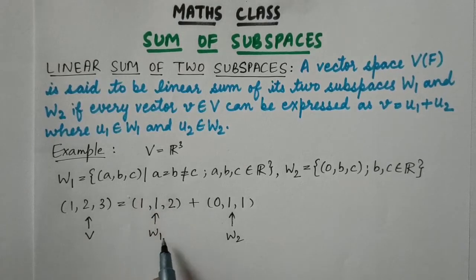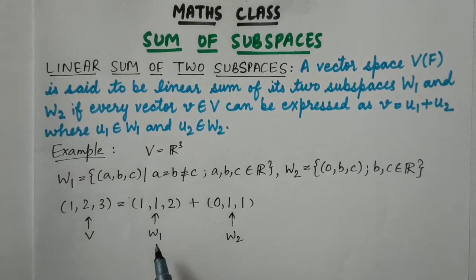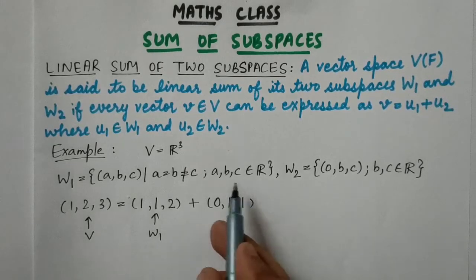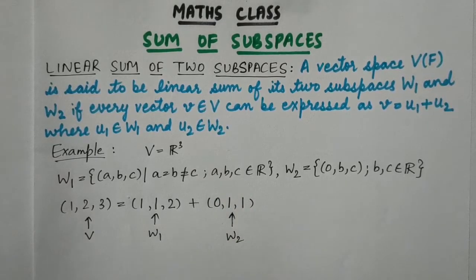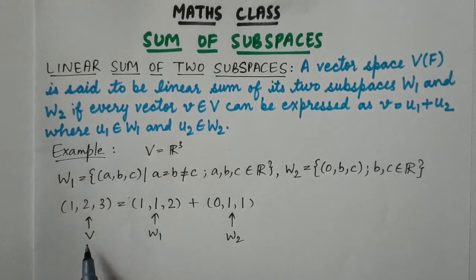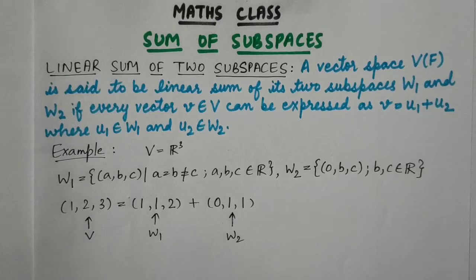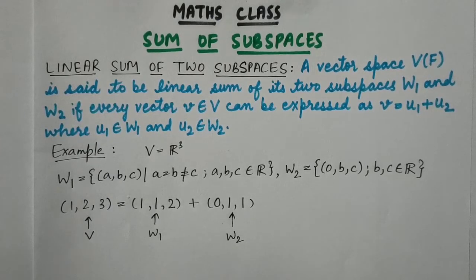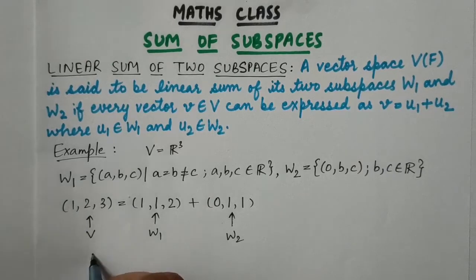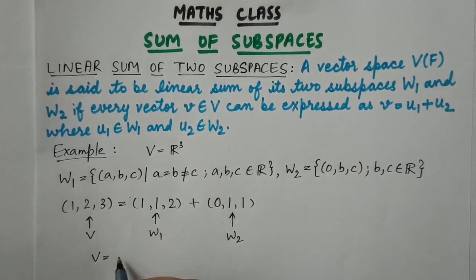So (1,1,2) is an element of subspace W1 and (0,1,1) is an element of subspace W2. We have clearly written the element (1,2,3) of V as the sum of elements from W1 and W2. This is what the linear sum of two subspaces means, and it is denoted by W1 + W2.